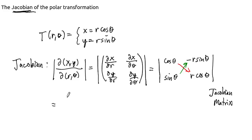And so when we do this process, we end up with r cosine squared theta minus a negative, so minus a negative becomes plus r sine squared theta. And then we can factor out the r. We've got cosine squared theta plus sine squared theta. And by the Pythagorean identity, this is just r.